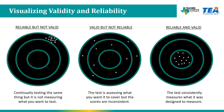A test can also be valid but not reliable — for instance, the English 4 class takes an assessment but the scores are all over the place. There may be many reasons this could happen, such as an issue with the directions, the wording of a problem, or the scoring of the assessment. An investigation would need to be completed to determine the root cause. Our goal is to have both valid and reliable assessments, as all components of a successful system depend on validity and reliability.